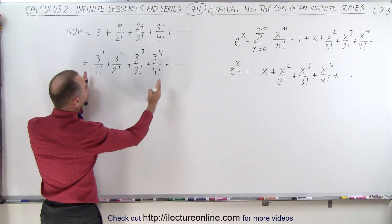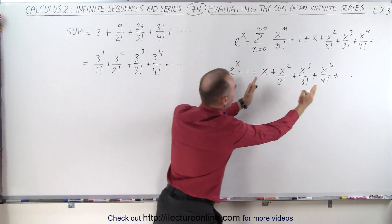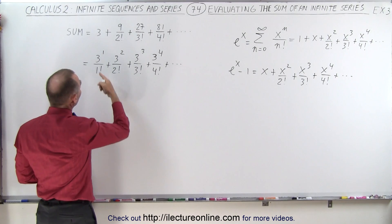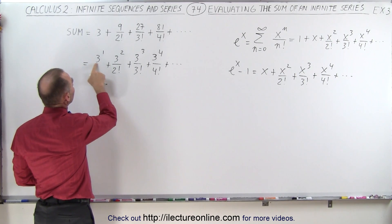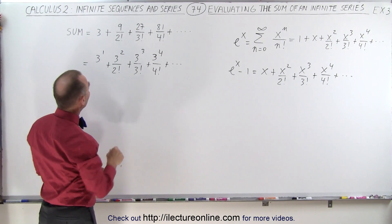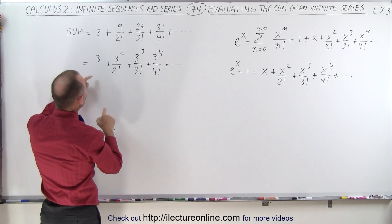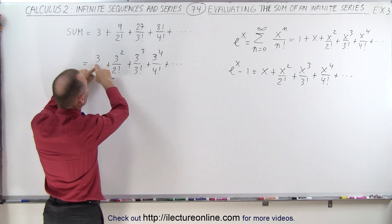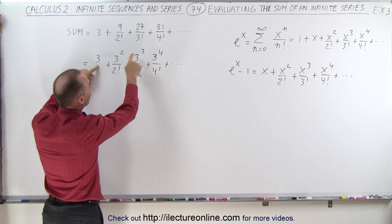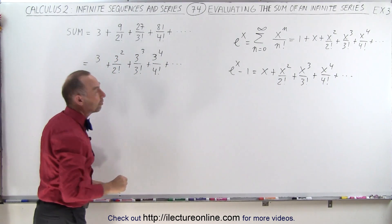Now notice what we have here and what we have here is exactly the same. We can get rid of the over 1 factorial and instead of 3 to the first power we can just simply write 3, and now we can see that instead of x we have a 3, 3 squared is x squared, 3 cubed is x cubed and so forth.